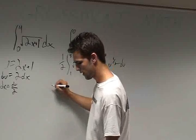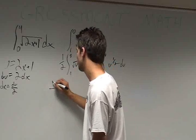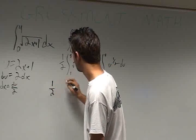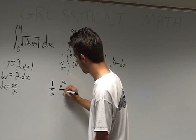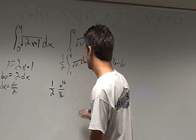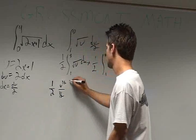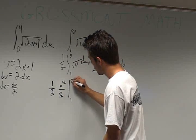Then we take the antiderivative. We get u to the 3 halves divided by 3 halves, evaluated from 1 to 9.